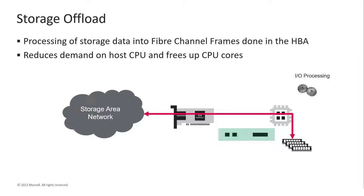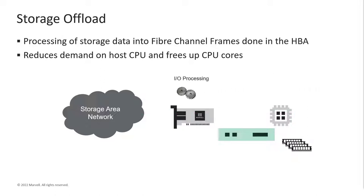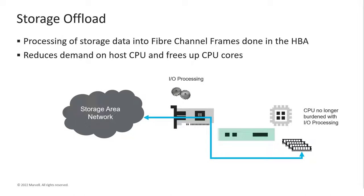One of the key elements in Fibre Channel is that HBAs all support storage offload. With most adapters, when a host wants to do an activity, the CPU accesses the host's memory, pulls the data through the CPU where it's formatted to the type of I/O, and then it's sent to the I/O device over the PCIe bus. With Fibre Channel, when a write or read command is required, the CPU tells the HBA, and the HBA fetches the data directly from memory, puts it into the Fibre Channel frame format, and sends it off to the SAN.